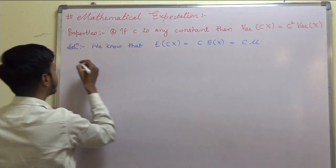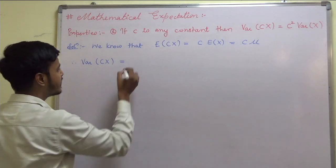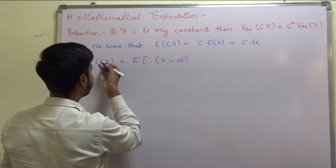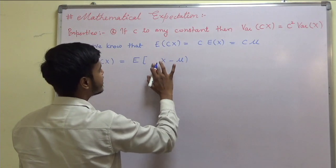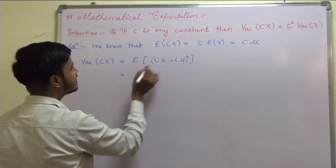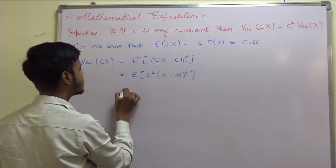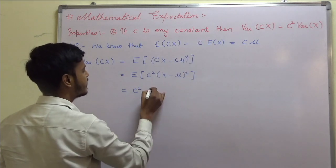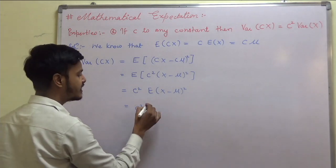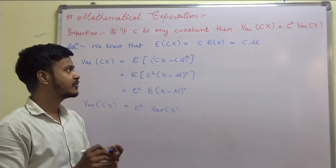We have to prove this. So we start with the left hand side. Variance of cX is equal to — what is variance of cX? It is nothing but expectation of, if it is X we write X minus mu whole square, but it is cX, so we write (cX minus c·mu) whole square. Using the property of expectation, we can write expectation of c squared (X minus mu) whole square, which equals c squared times expectation of (X minus mu) whole square. That is the definition of variance of X. So, variance of cX equals c squared times variance of X. This is the first property.